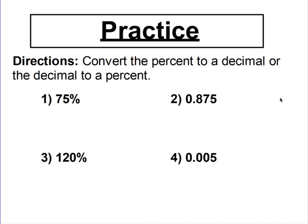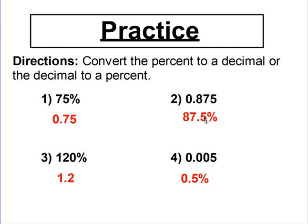Pause the video and try to convert these decimals to percents or the percent to a decimal — change it into whichever one it is not. For questions one and three, the decimal point moved two spaces to the left to convert the percents to decimals. And in questions two and four, the decimal point was moved two spaces right because we wanted to turn the decimals into percents.